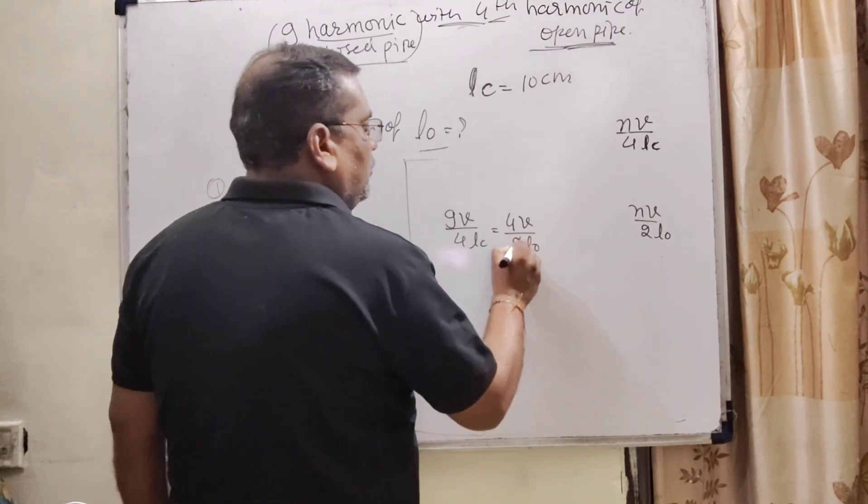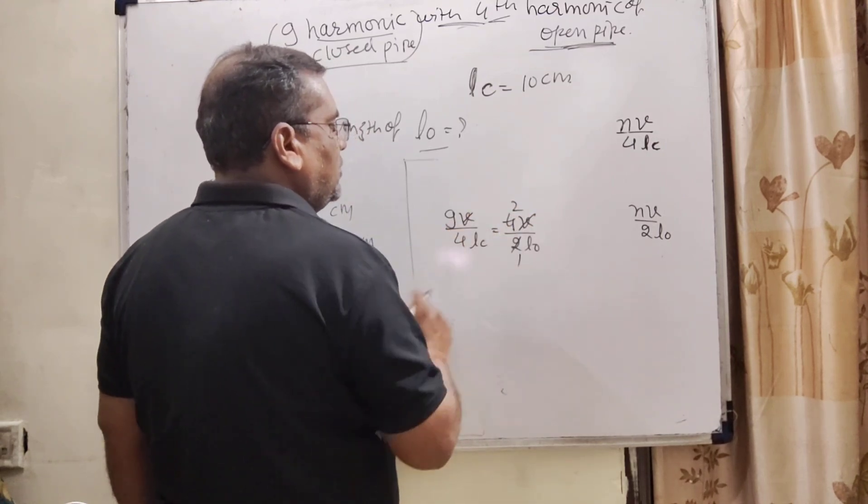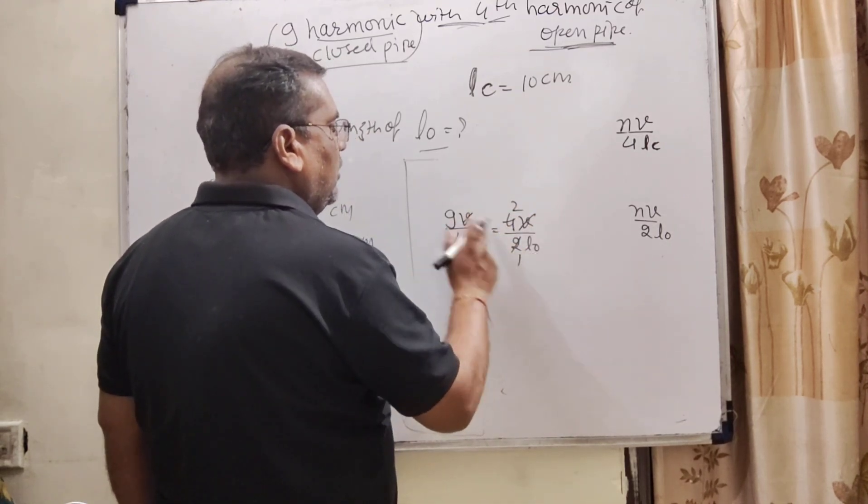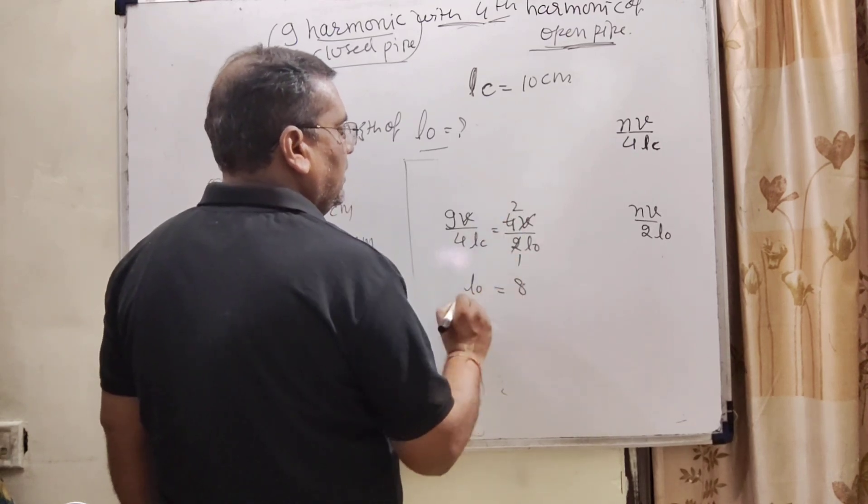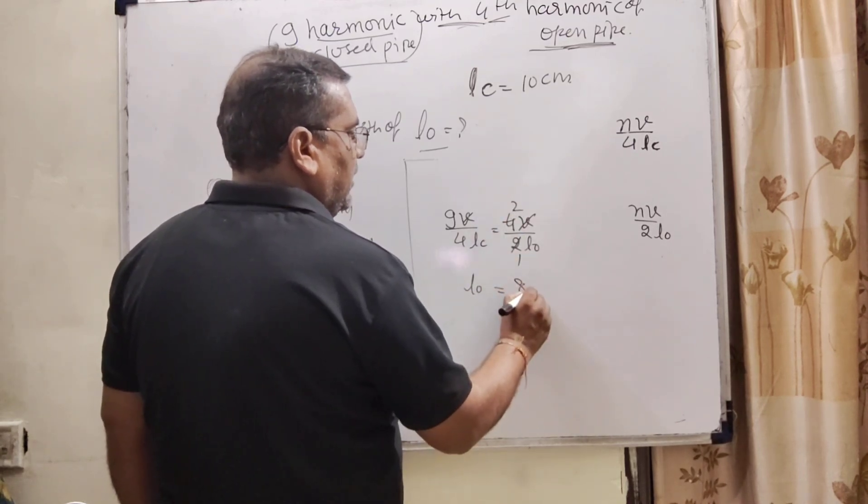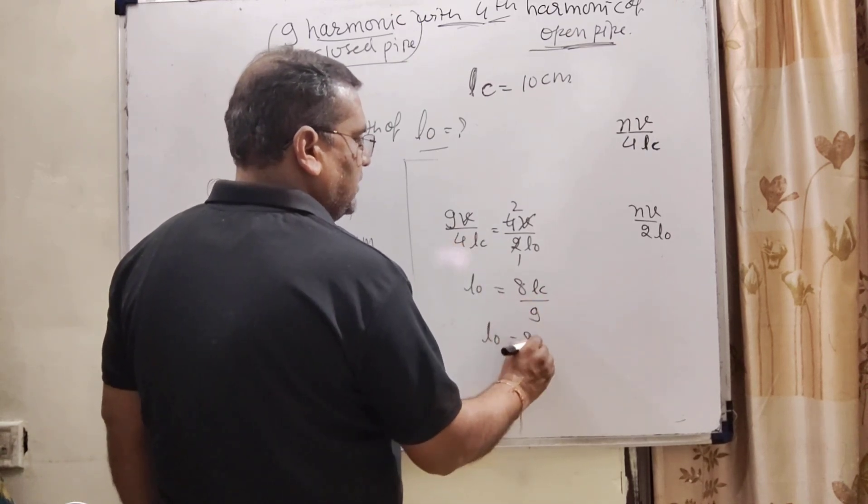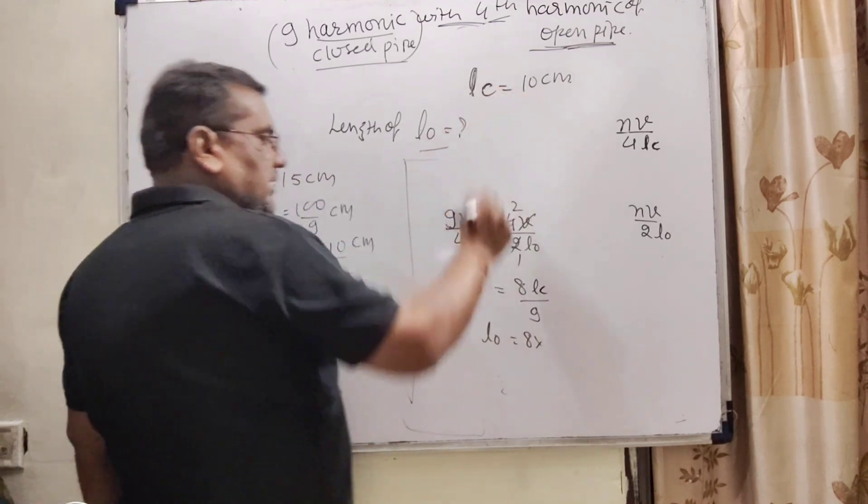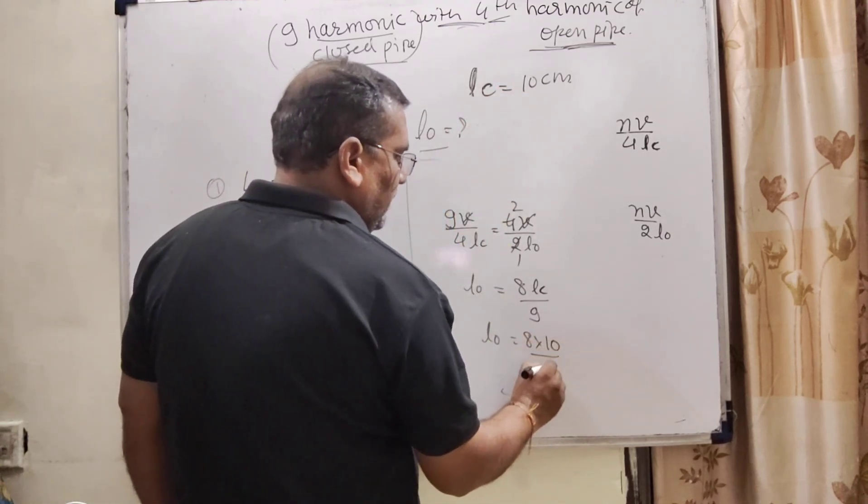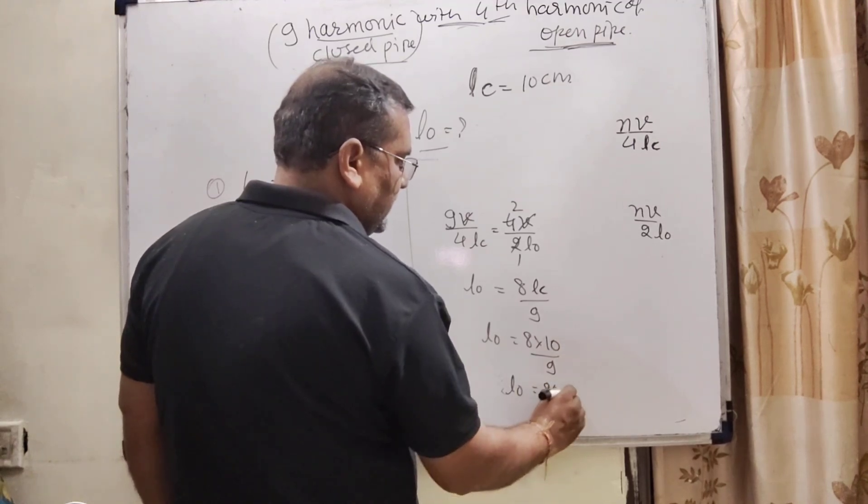So, here we calculate L0. L0 is equal to 4 times 2 is 8, and LC upon 9. And what is the length of closed organ pipe? That is given 10 cm upon 9. That is 80/9 cm.